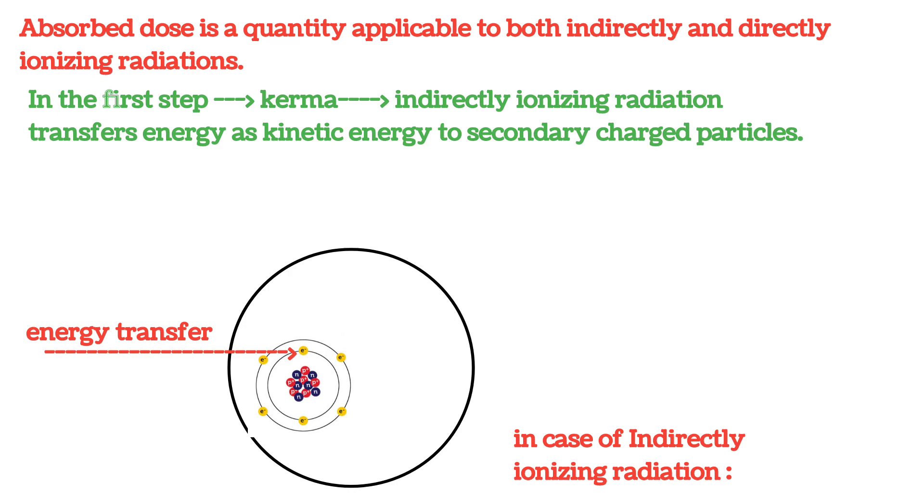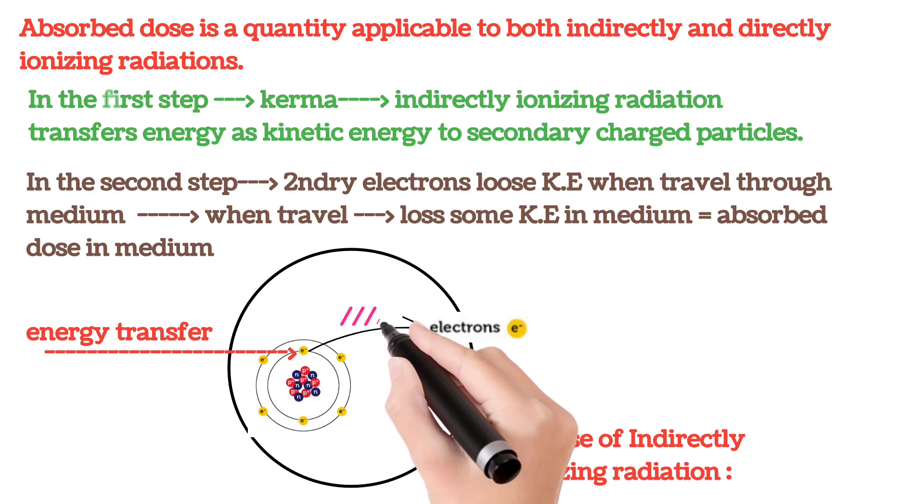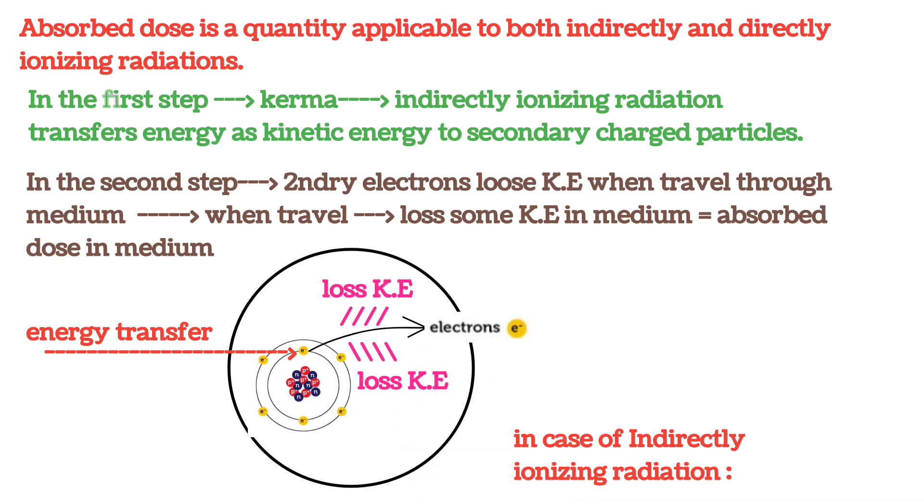In the second step, these secondary charged particles further travel in medium and lose their major part of kinetic energy. And this loss of kinetic energy is equal to the amount of absorbed dose in the traversed medium.